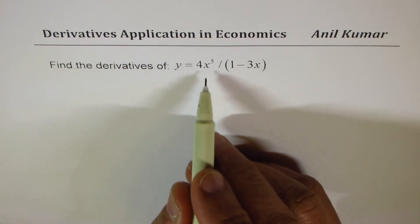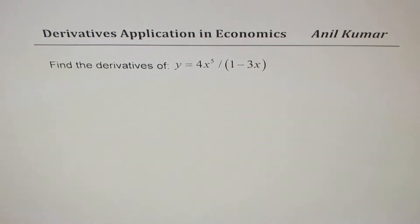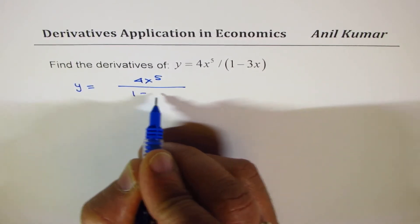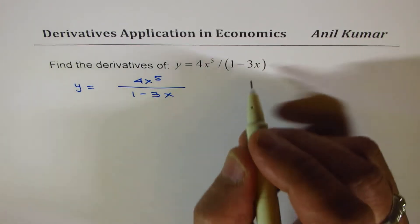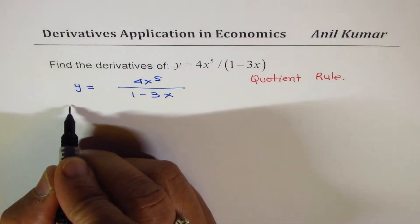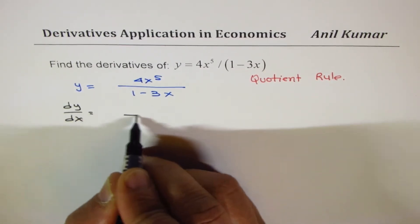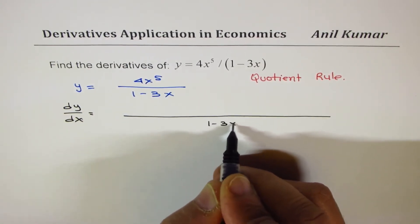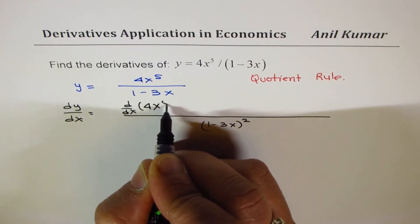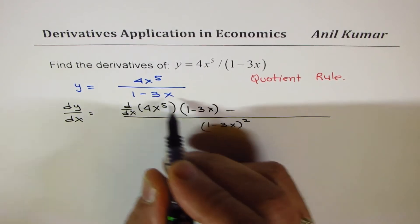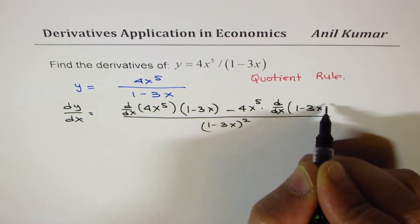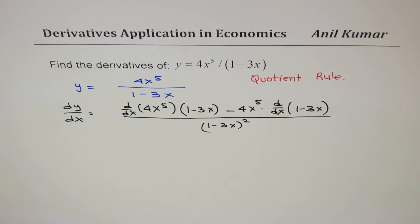The next example: find the derivative of 4x^5 divided by (1 minus 3x). Let me rewrite this as y equals 4x^5 over (1 minus 3x). Here we are going to apply the quotient rule. The derivative dy/dx can be written with square of the denominator (1 minus 3x)^2 in the denominator.